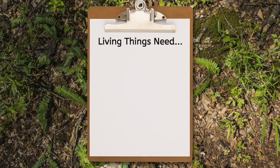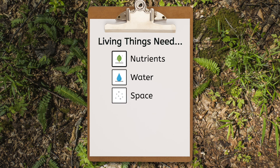Do you remember the five things that living things need to survive? Take a moment to pause and record those in your field notes. Try your best, and if you can't remember, we'll review it after the pause. Living things need nutrients, water, space, light, and air to survive. As we explore, make note of where you see these provided by the forest in your field notes.